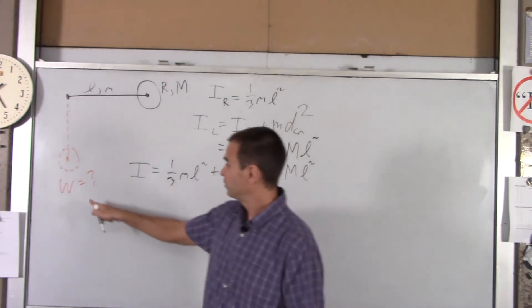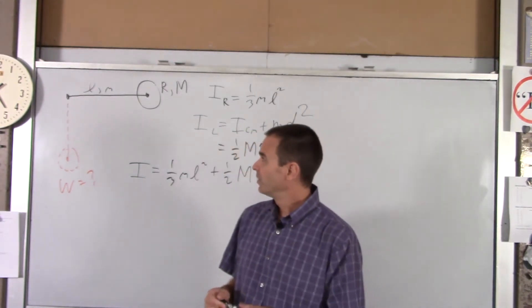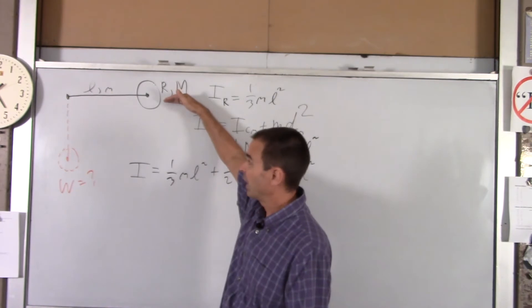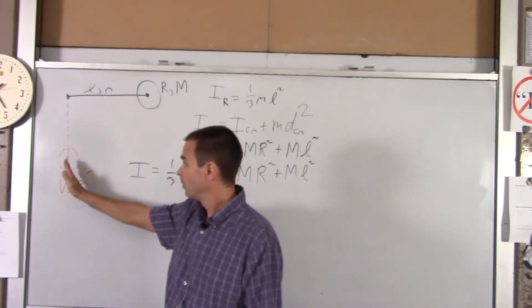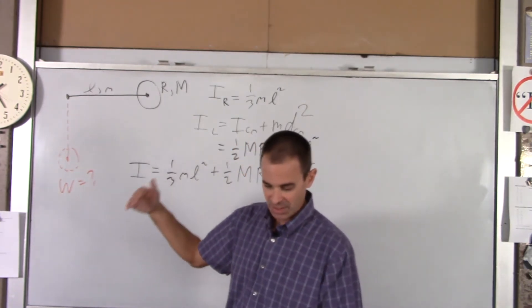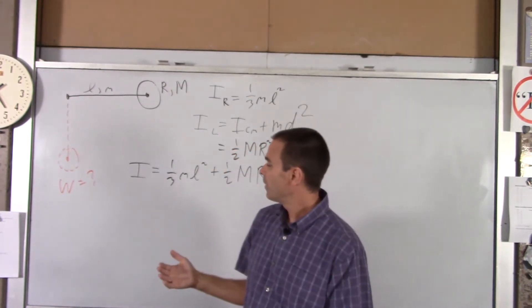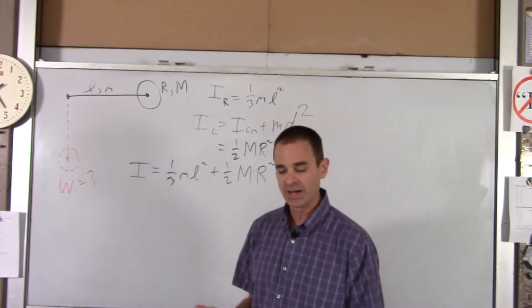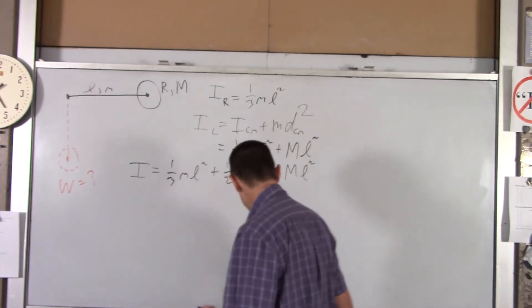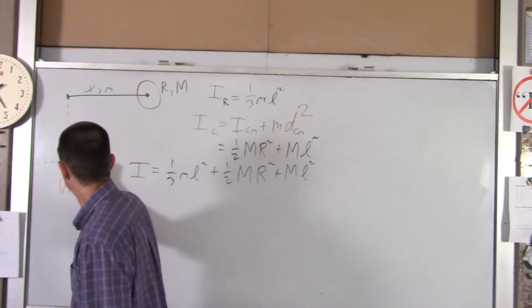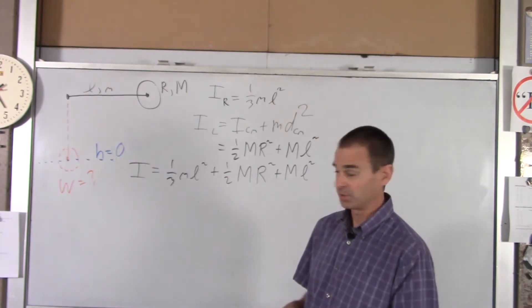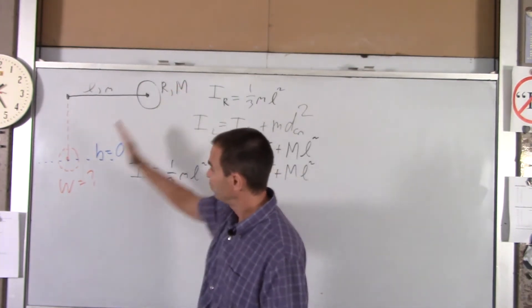To figure out how fast this thing is going here, the easiest way to do it by far is to do conservation of energy. Up here we've got gravitational potential energy, and down here we have rotational energy. Now you do have to be very careful with your gravitational potential energy. You have to make a decision - where is your zero height? For my example, I am going to pick this is zero height. That'll reduce my terms at least a little bit. This will be position 1 and this will be position 2.